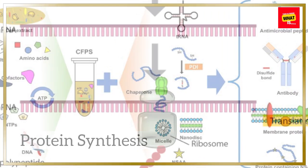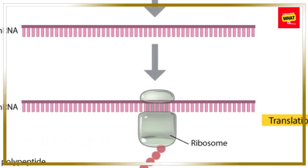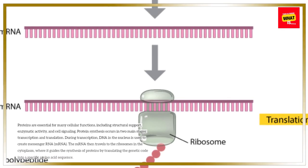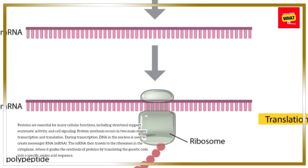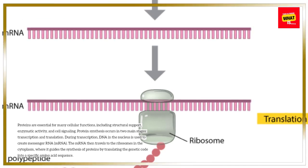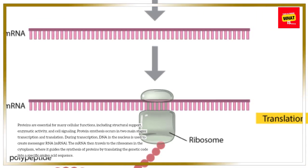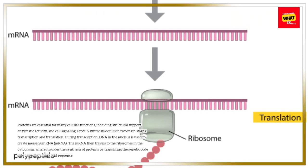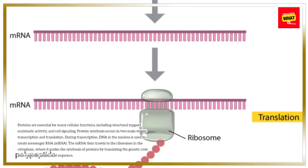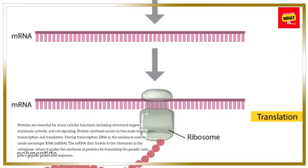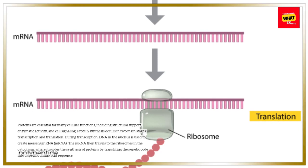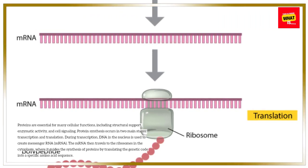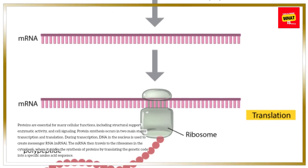Proteins are essential for many cellular functions, including structural support, enzymatic activity, and cell signaling. Protein synthesis occurs in two main stages: transcription and translation. During transcription, DNA in the nucleus is used to create messenger RNA, mRNA. The mRNA then travels to the ribosomes in the cytoplasm, where it guides the synthesis of proteins by translating the genetic code into a specific amino acid sequence.